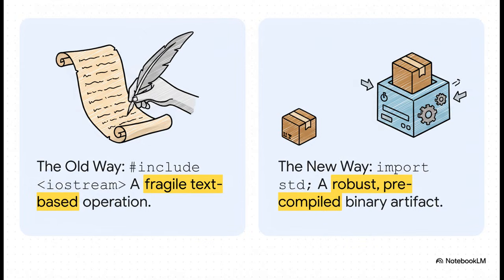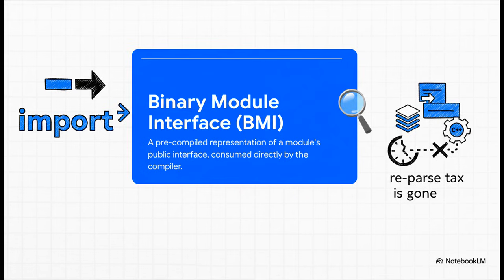And on the surface, it looks like such a simple syntax change. I mean, we go from the old way, include, which we now know is just a fragile text-based copy-paste job, to the new way, import. And import refers to a robust pre-compiled binary artifact. This one little change illustrates the entire fundamental shift. We are no longer just mindlessly copying pasting text. So what's the magic behind import? It all comes down to something called a binary module interface, or a BMI. The best way to think about a BMI is like a pre-digested summary of a module's public-facing parts.